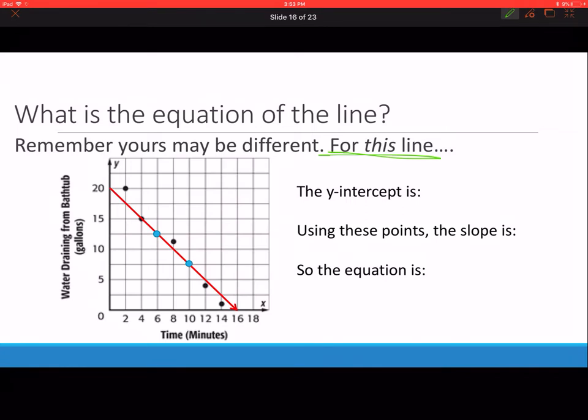The y intercept is 20. For the slope, we're going to use those two points: 6 comma 12.5 and 10 comma 7.5. We stack them on top of each other and slip and slide. 12.5 minus 7.5 is 5, and 6 minus 10 is negative 4. So our slope is 5 over negative 4.